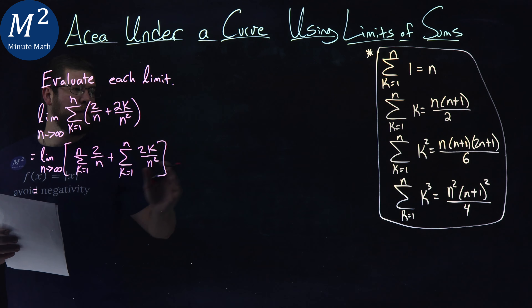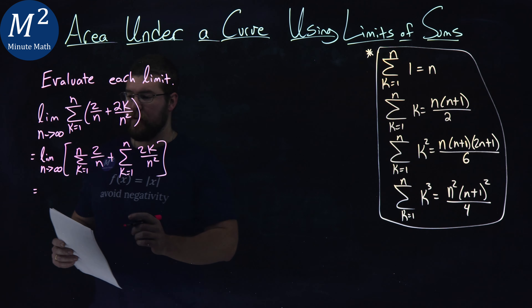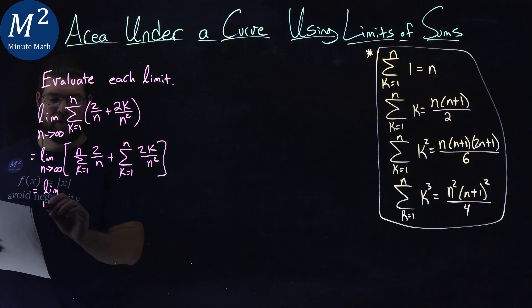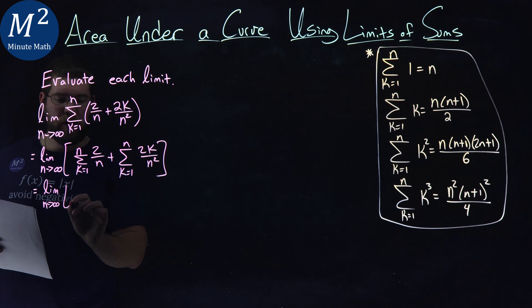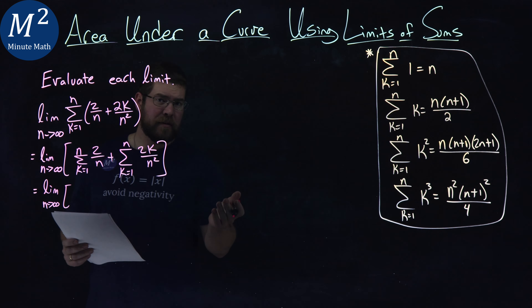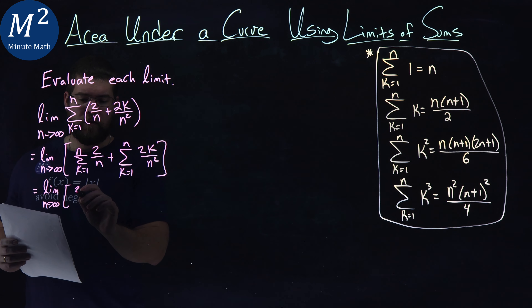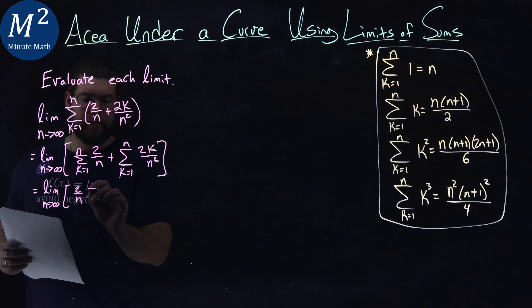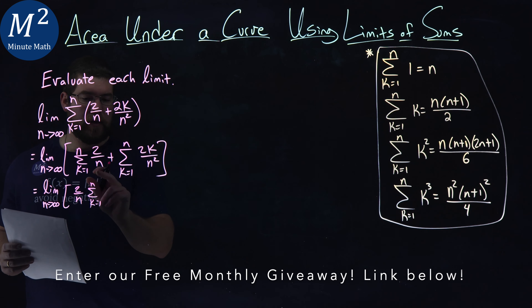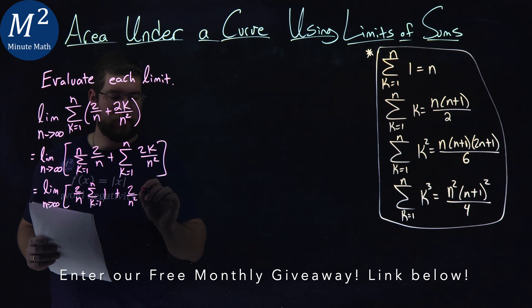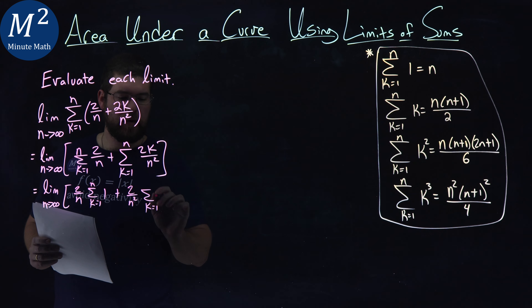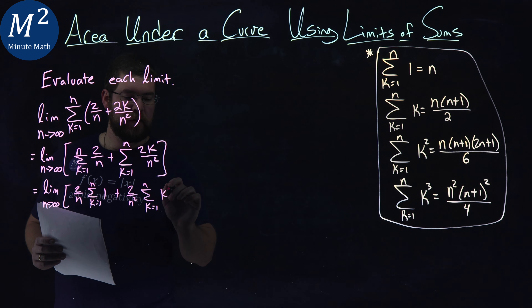Now we'll see if we can pull apart and make it look like one of our definitions. We have the limit as n goes to infinity of the first part. We know we can bring the constant out front — the n doesn't get affected by the sum. So we have 2 over n times the sum from k equals 1 to n of 1, and then plus 2 over n squared outside of the sum, times the sum from k equals 1 to n of k.